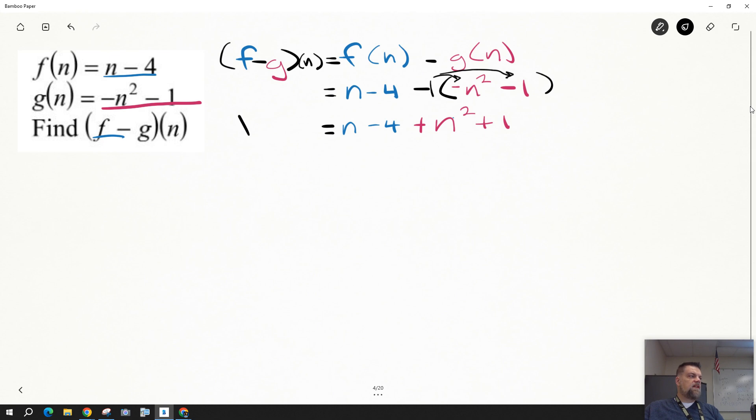And all that's going to equal my f minus g of n. Okay? So now I'm going to combine like terms. I like to write it in descending order. I see that I have n squared, just one of them. So I toss that to the front. Next, I deal with the n's.